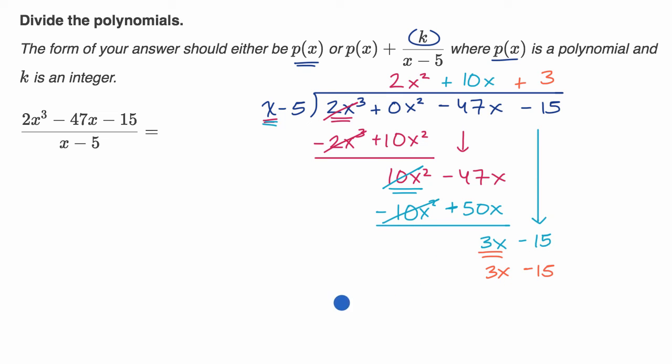We want to subtract the orange from the teal. And so this becomes a negative. This becomes a positive. 15, or negative 15 plus 15 is zero. And 3x minus 3x is zero. So you're just left with zero. So no remainder.